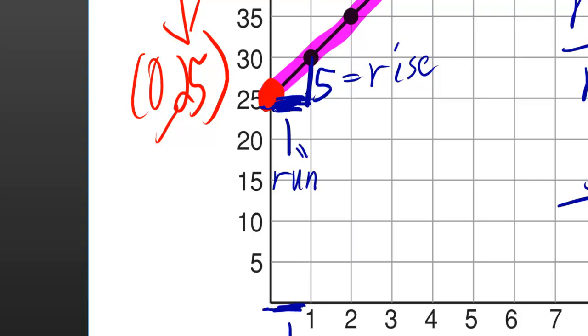Well, the run is this section right there which is the difference between 1 and 0. So, you could say 1 minus 0 but in this case you can just say 1. And here the rise is whatever 30 minus 25 is which of course is 5.